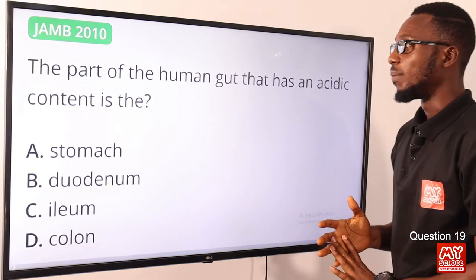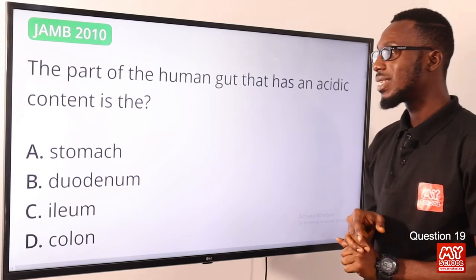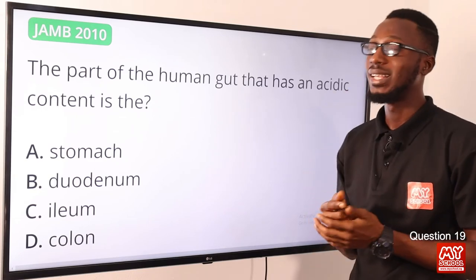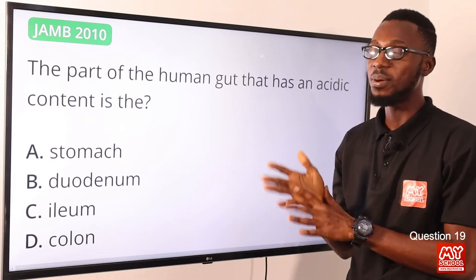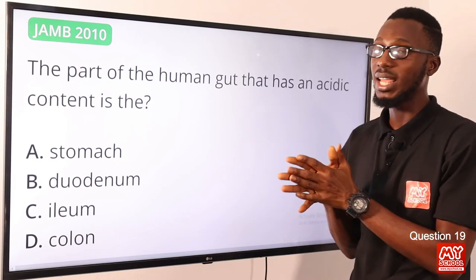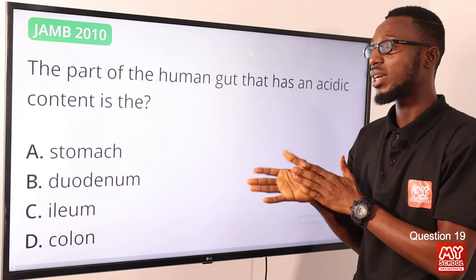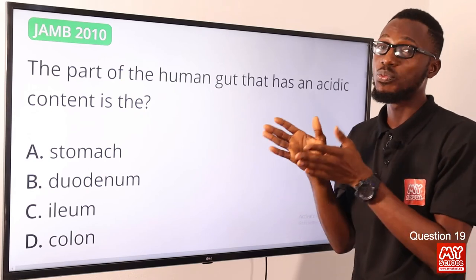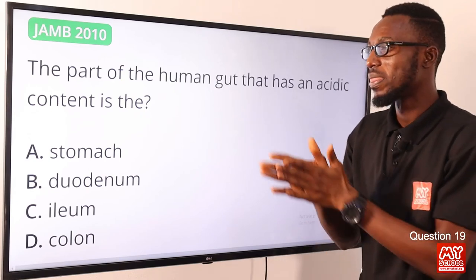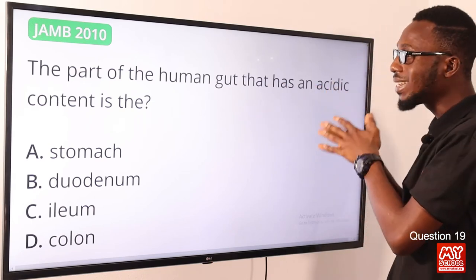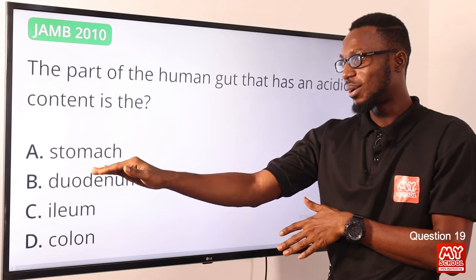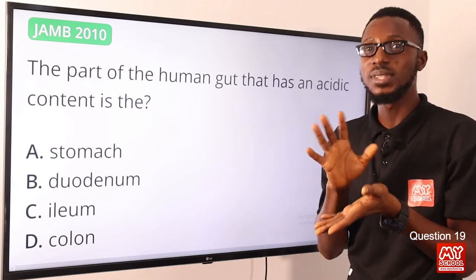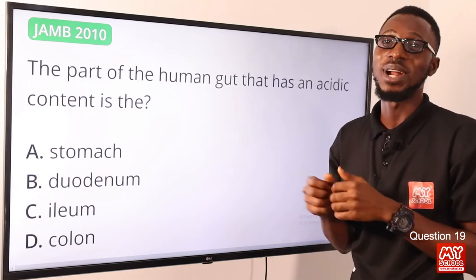Question 19: The part of the human gut that has an acidic content is the stomach. Content coming from the tongue is alkaline in nature. In the stomach, the gastric juice contains two important enzymes: pepsin, which acts on protein, and rennin, which acts on milk. Pepsin works best in an acidic medium. The human gut refers to the alimentary canal. The correct option is option A, the stomach.